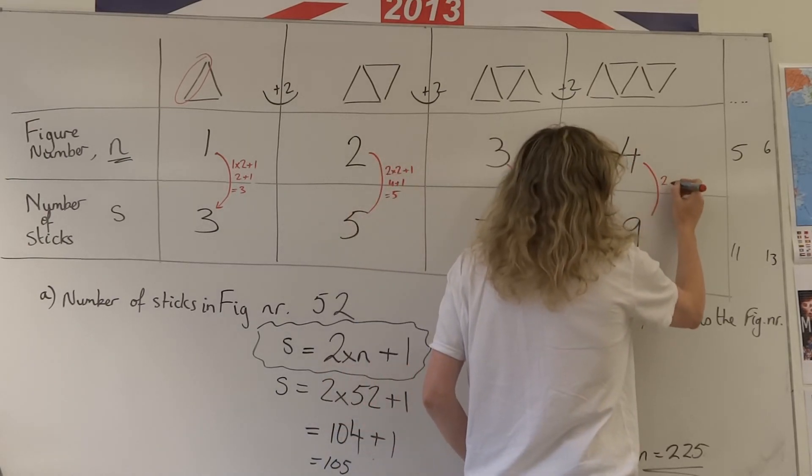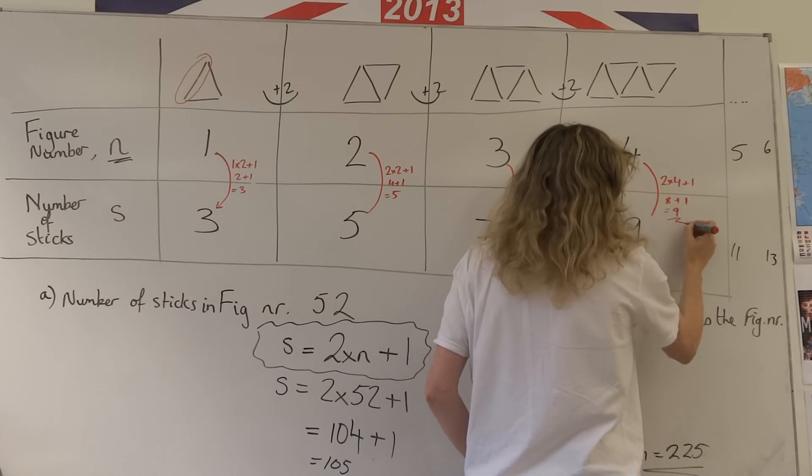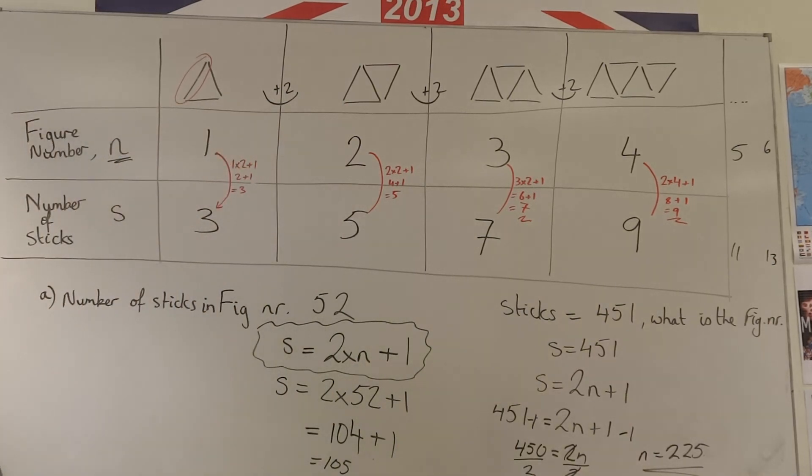Two n plus one, two times four plus one equals eight plus one equals nine. So we have the right formula. And that's something you should always remember to try and check. Okay.